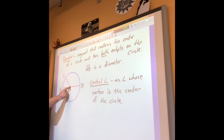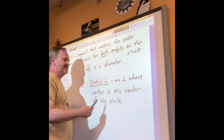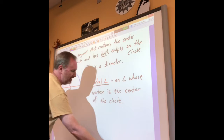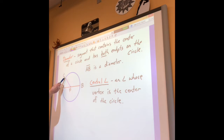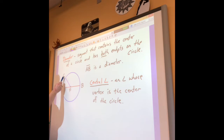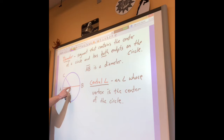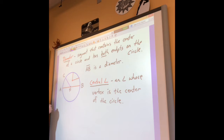PC is not a diameter because it just goes from the center out to the circle - it doesn't go all the way to the other side. Now, central angles are going to be very important in a few minutes. A central angle is an angle whose vertex is the center of a circle. For example, angle CPA is a central angle, and angle CPB is another central angle. It doesn't just mean any angle inside the circle - if the vertex is not at the center, it's not a central angle.